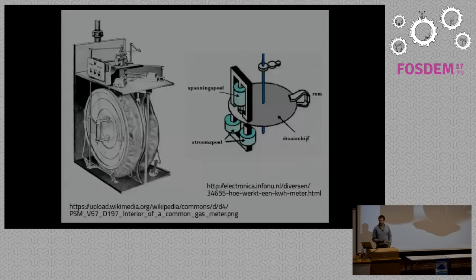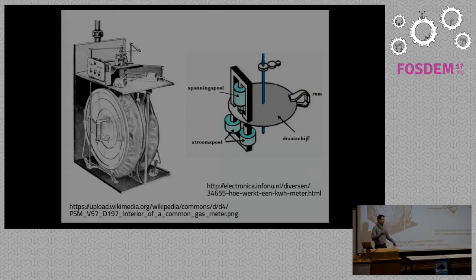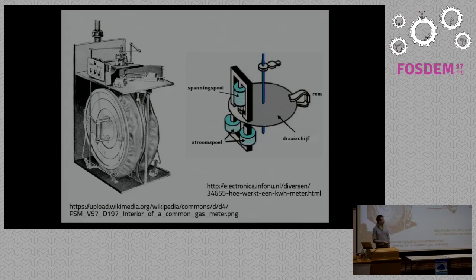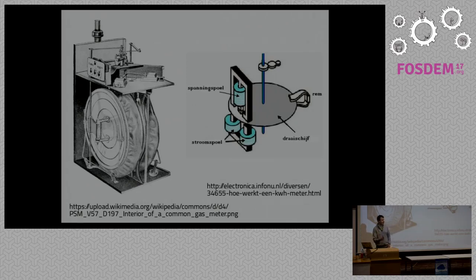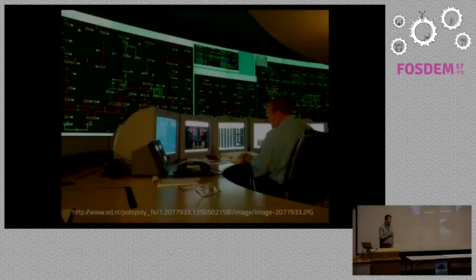Especially in billing, we're interested in the amount of energy delivered. On the left are the internals of a gas meter — basically two containers, two lungs, pumping gas into each other — so we know in pieces of gas how much is delivered. On the right, we have a disc for the electricity meter, where voltage and current result in power, which spins the wheel and registers the amount of energy delivered.